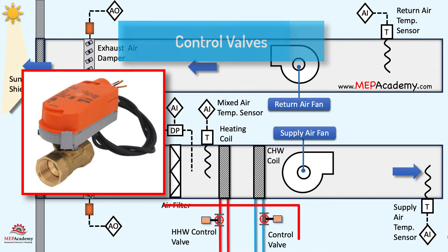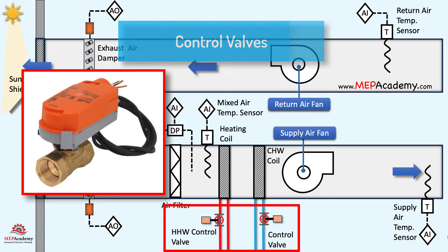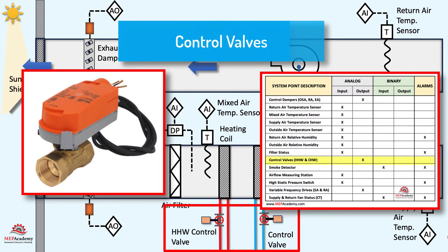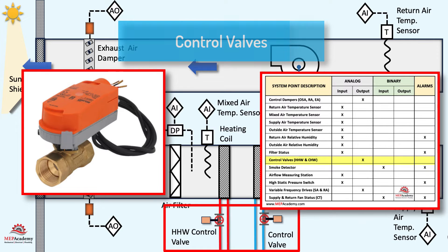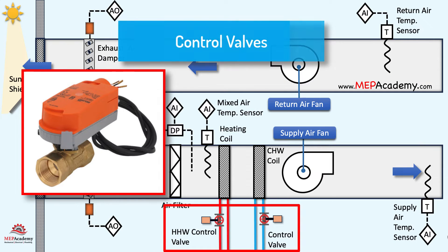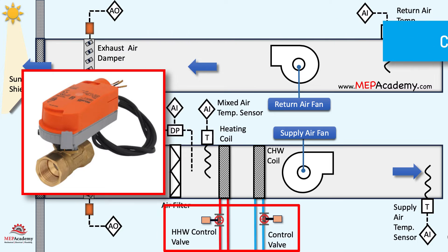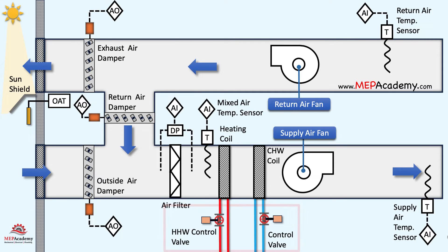The primary function of the chilled water and heating hot water control valves are to regulate the flow of water through the system to achieve the desired cooling or heating effect. It controls the amount of water entering the coils.